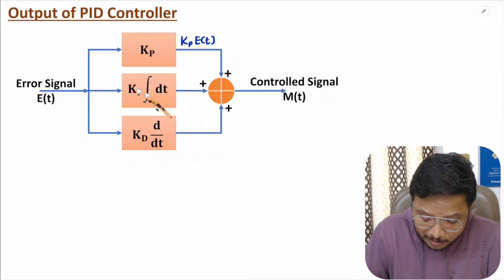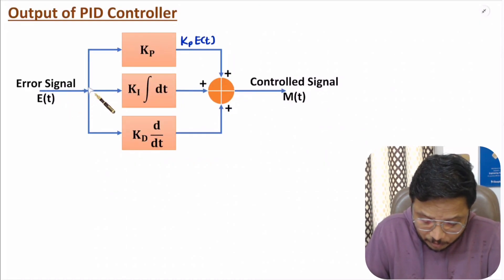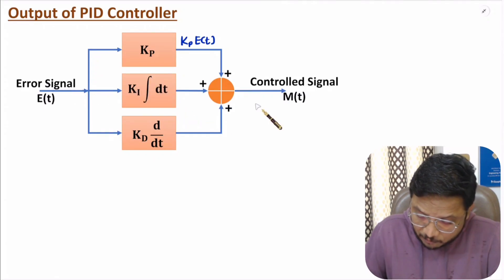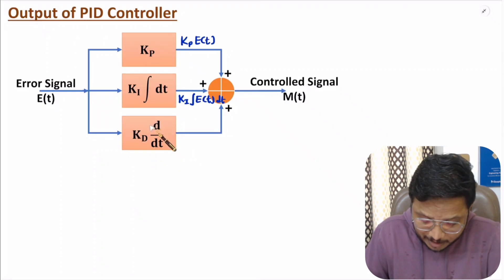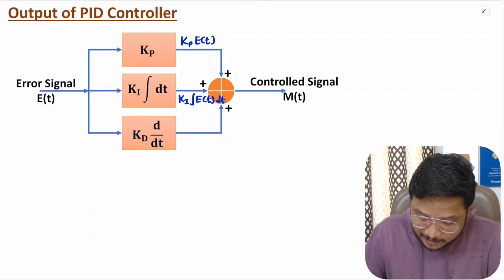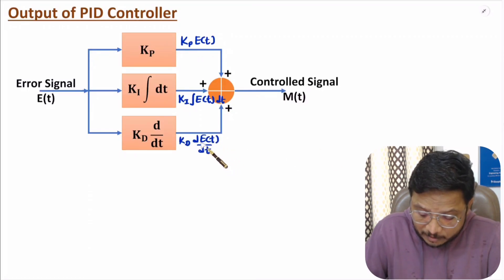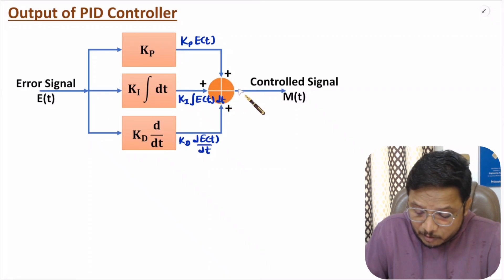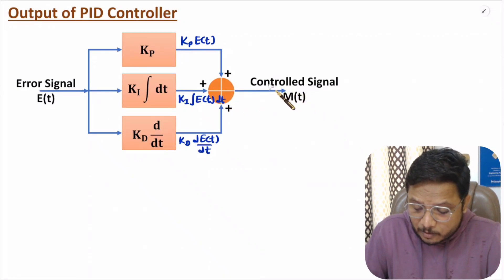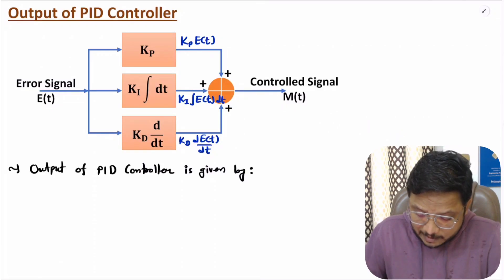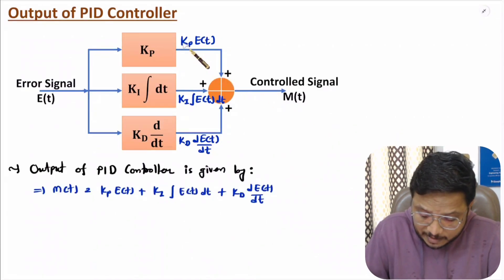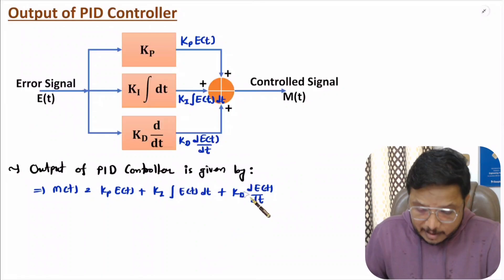Output of the integral controller is K_I into the integration of E(t)dt. Output of the differential controller is K_D into the differentiation of input, that is K_D into dE(t)/dt. These three outputs are added together to give the total output, which is the controlled signal. So the total output is the algebraic sum of these three outputs.